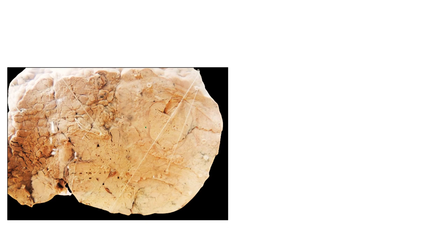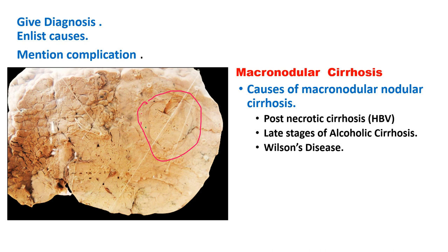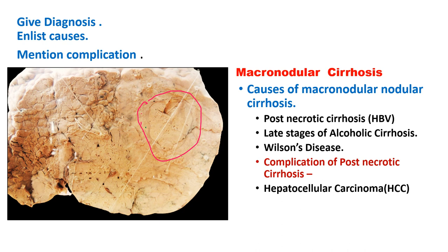This is the same case viewed from the posterior side, showing the cut surface with clearly large macronodules. Macronodular cirrhosis is importantly caused by hepatitis B and hepatitis C and is a precursor lesion for hepatocellular carcinoma. Causes of macronodular cirrhosis are post-necrotic cirrhosis, HBV, late-stage alcoholic cirrhosis, and Wilson's disease.